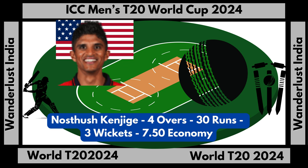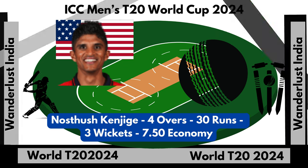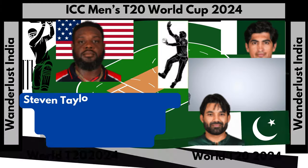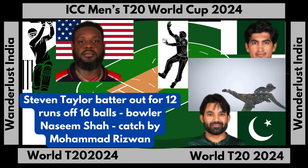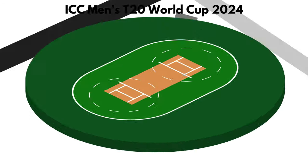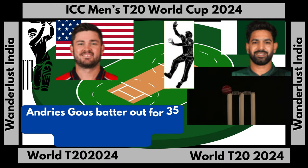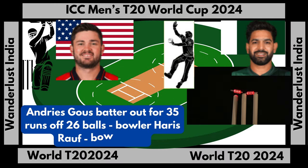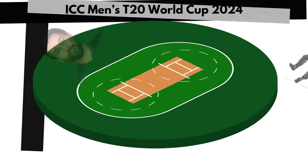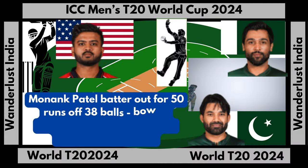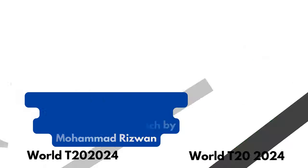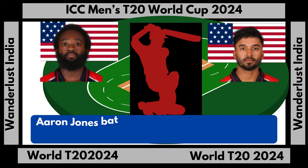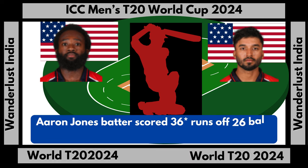Stephen Taylor out for 12 runs off 16 balls, bowler Naseem Shah, caught by Mohammad Rizwan. Andries Gous out for 35 runs off 26 balls, bowler Harris Rauf, bowled out. Monank Patel out for 50 runs off 38 balls, bowler Mohammad Amir, caught by Mohammad Rizwan.